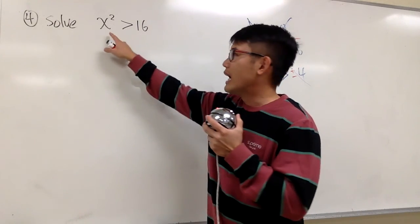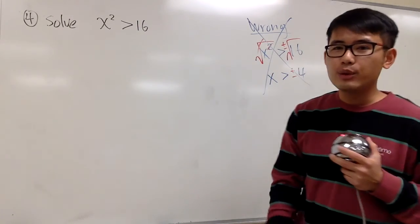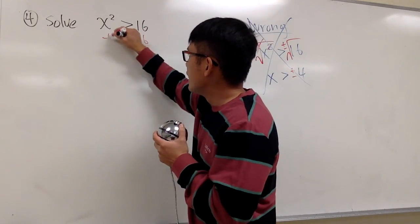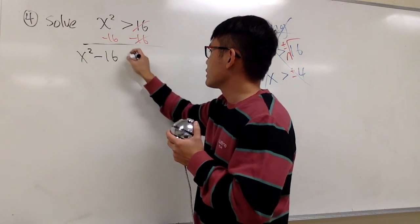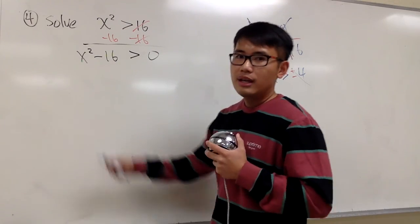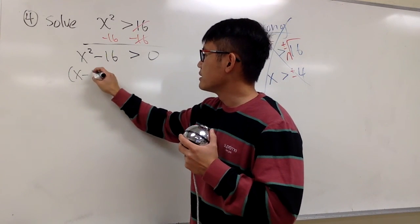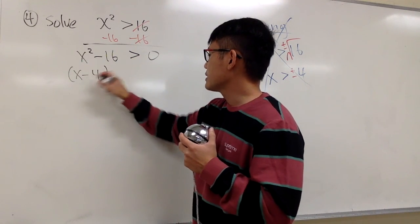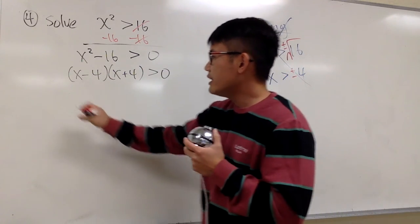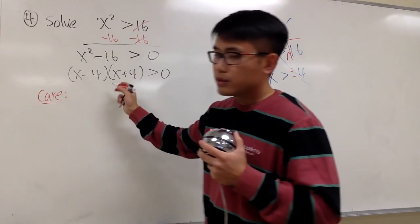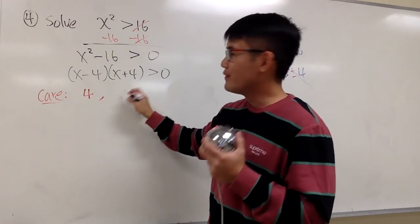I'm going to do this by factoring. We have x squared greater than 16. To factor, make sure one side equals 0 — subtract 16 from both sides to get x squared minus 16 greater than 0. We can factor this as a difference of two squares: x minus 4 times x plus 4, greater than 0. What are the numbers we care about? For the first factor, positive 4. For the second factor, negative 4.